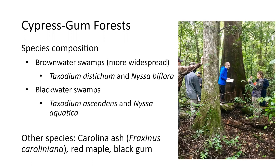Cypress gum swamps vary a little in species depending on whether you're in a brown water or black water swamp. Brown water swamps are more widespread and occur along rivers fed from the Piedmont, while black water swamps originate in the coastal plain. In brown water swamps you get Taxodium distichum, which we learned in lab, and Nyssa biflora — a tupelo or gum adapted for moist environments. Black water swamps have Taxodium ascendens and Nyssa aquatica, an even more water-loving tupelo. Red maple and black gum, which tolerate a wide range of conditions, are also found in these cypress gum swamps.